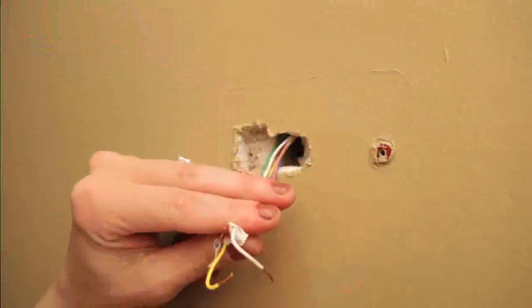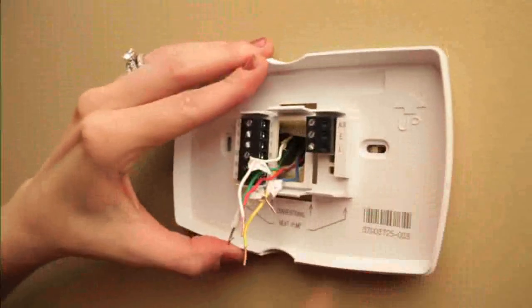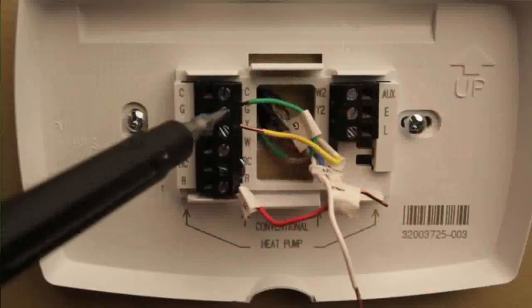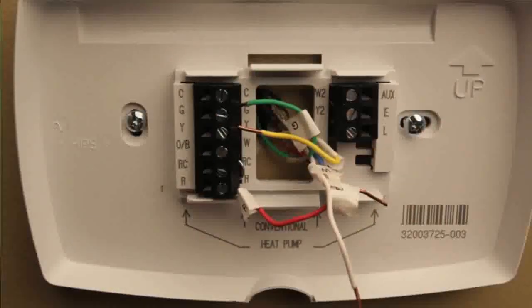Mount the wall plate from the new thermostat on the wall. The screws and anchors are included. Then connect the wires. All you have to do is match the labels to the designated letters on the wall plate.